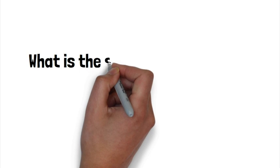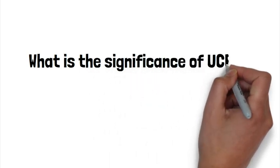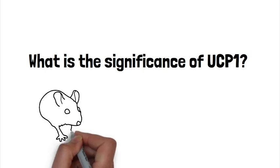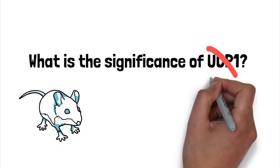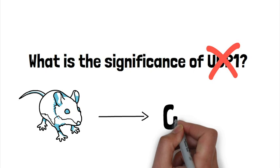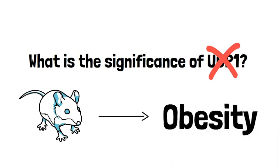So what is the significance of UCP1? Recent experiments demonstrated that mice, genetically engineered to not express UCP1, tend to have a lower metabolic rate and are more likely to gain weight and become obese when compared to normal mice that are fed a similar diet.